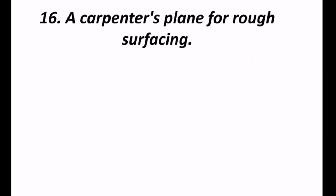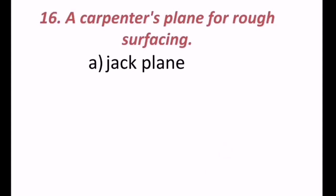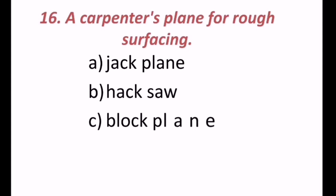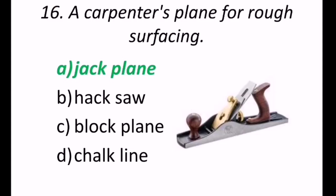16th question, a carpenter's plane for rough surfacing. A carpenter's plane for rough surfacing is, may be jack plane, or hacksaw, or block plane, or jack line. The correct answer is, jack plane. Jack plane is, for rough surfacing.